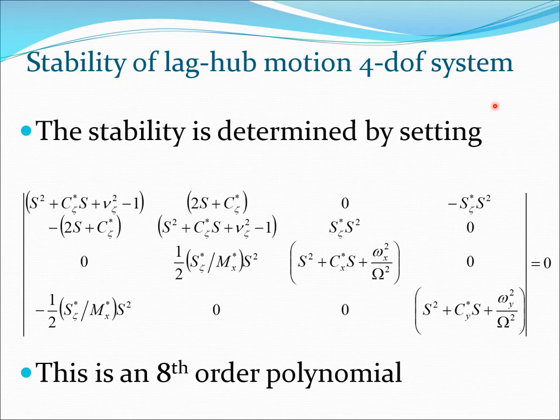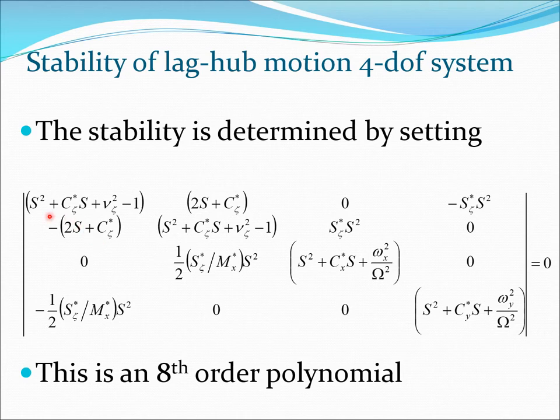If we take that differential equation, put it in first-order form, and then look at its stability — remember it's a constant coefficient system — we can substitute e to the power st and then expand that out. We get a determinant which is set to zero. After doing that we get a polynomial, which is an eighth-degree polynomial in s, and we have to solve for s. The roots of this polynomial tell us whether the system is stable or not.